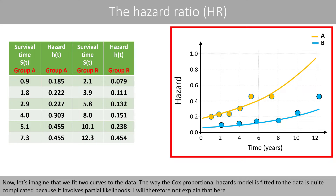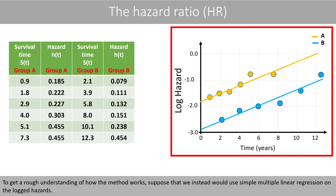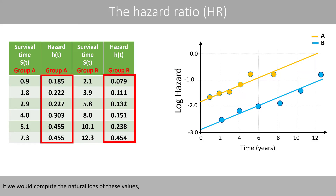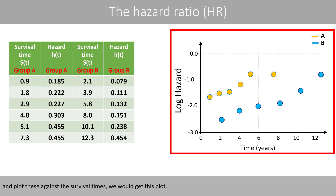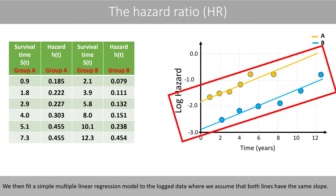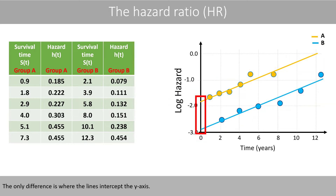Now let's imagine that we fit two curves to the data. The way the Cox proportional hazards model is fitted to the data is quite complicated because it involves partial likelihoods, so I will not explain that here. To get a rough understanding of how the method works, suppose that we instead would use simple multiple linear regression on the logged hazards. If we compute the natural logs of these values and plot them against the survival times, we then fit a simple multiple linear regression model to the logged data, where we assume that both lines have the same slope and differ only in their y-intercept.